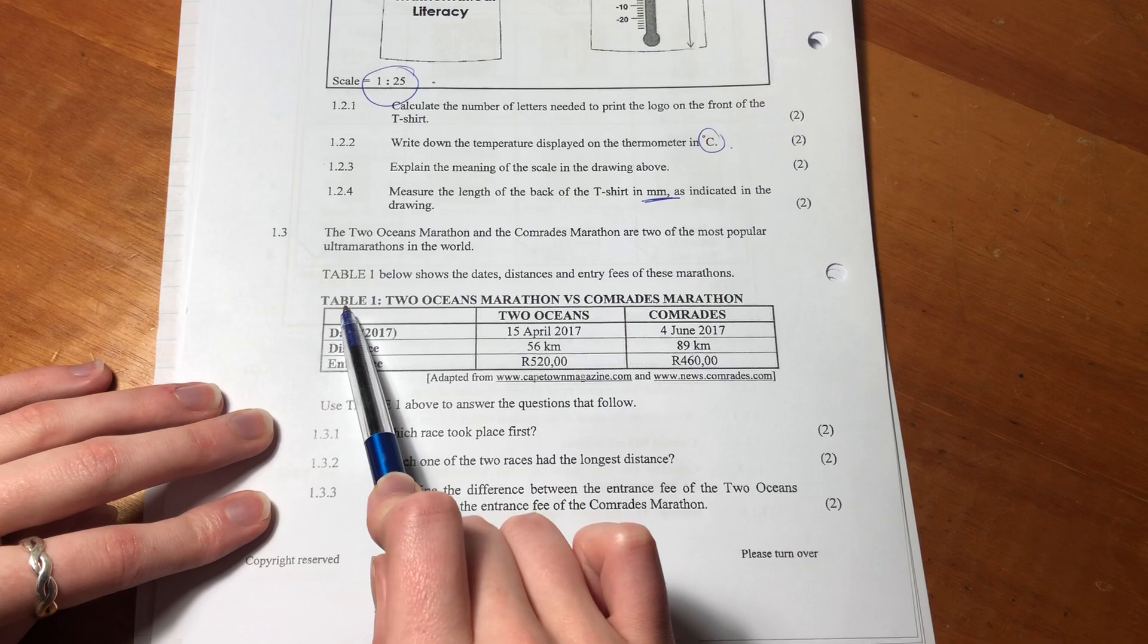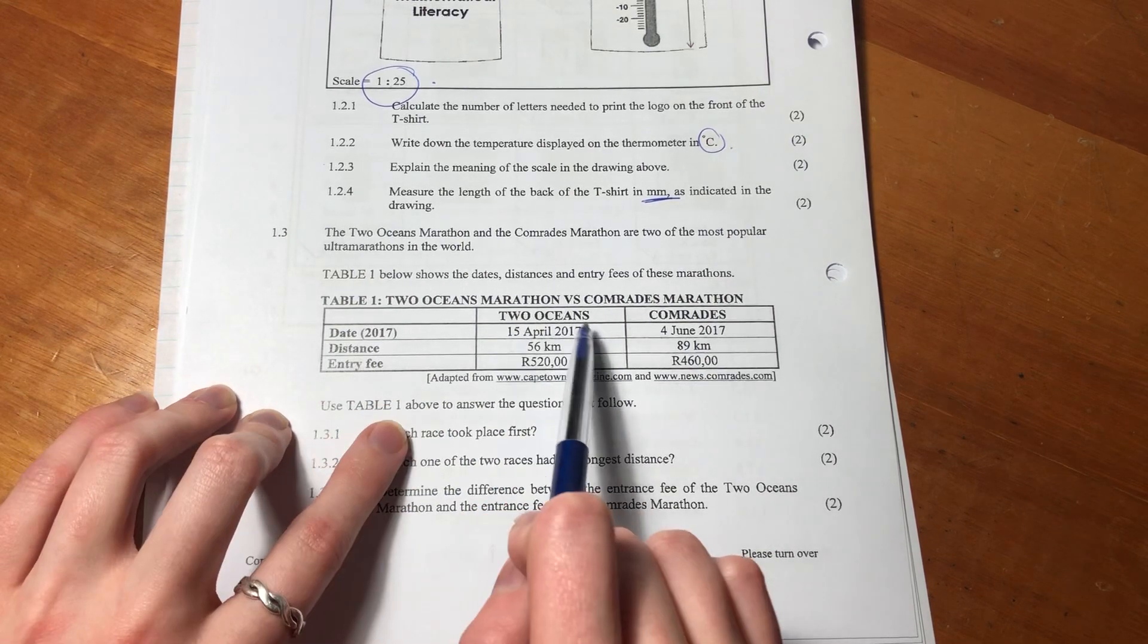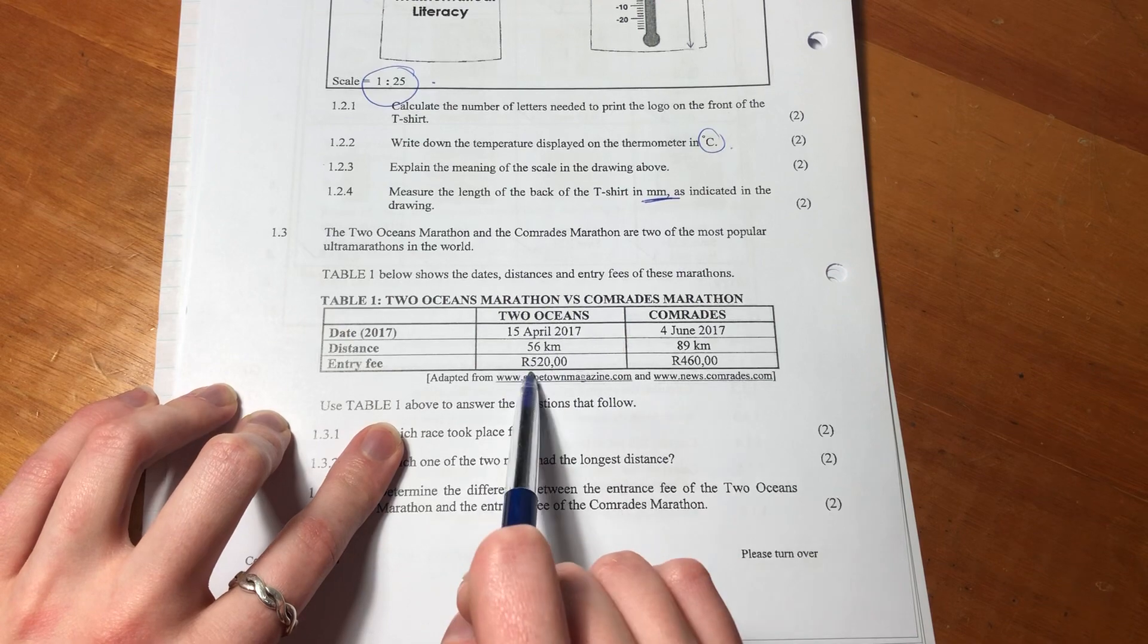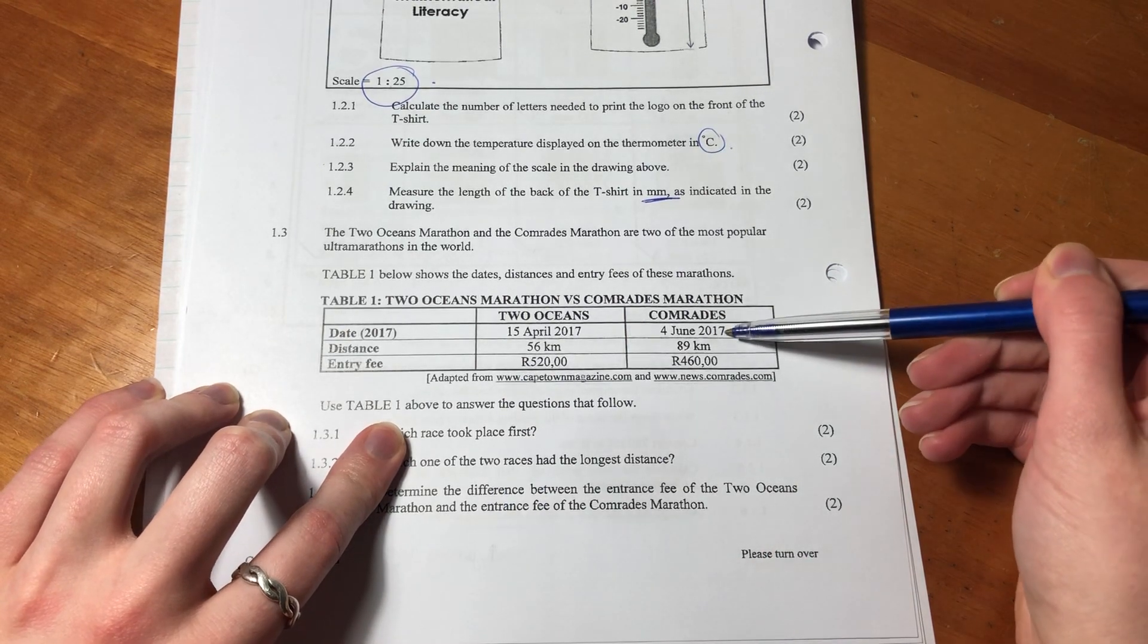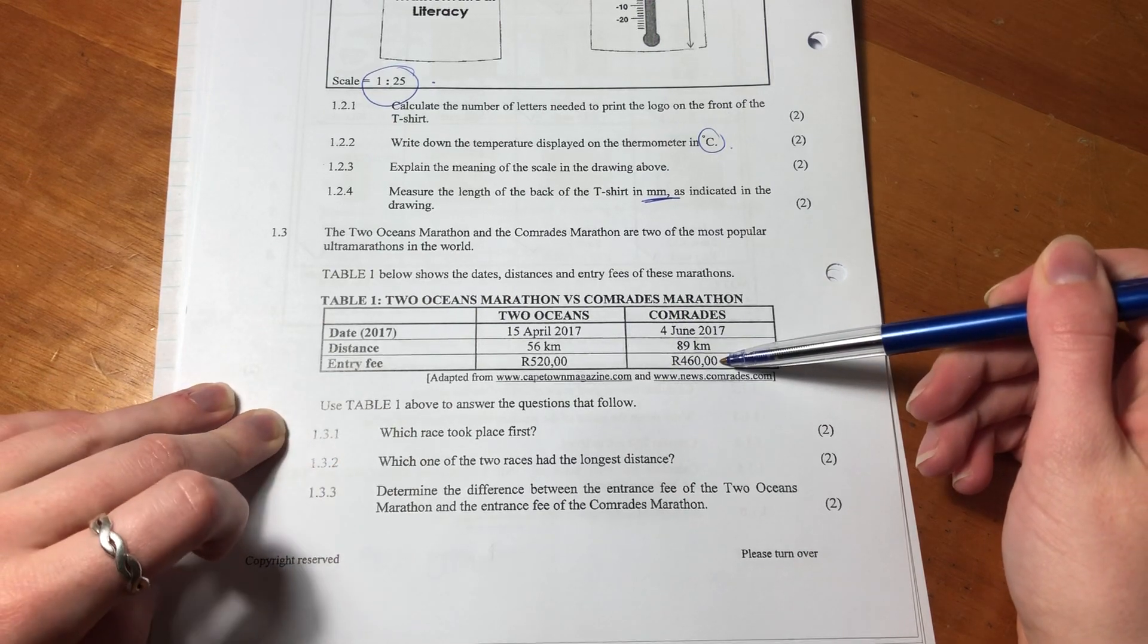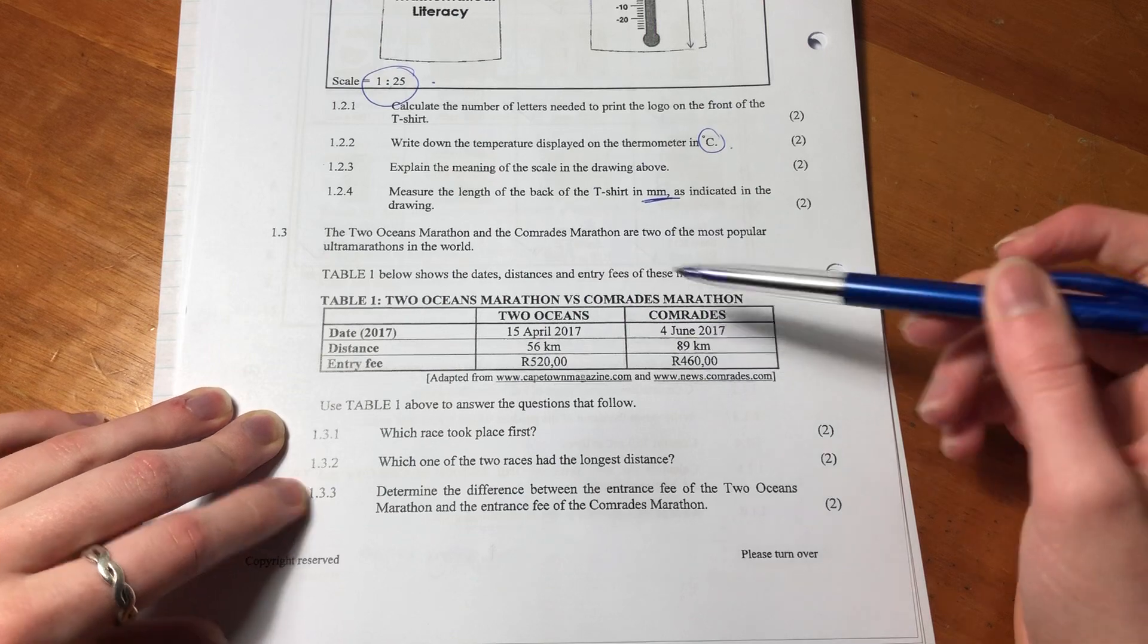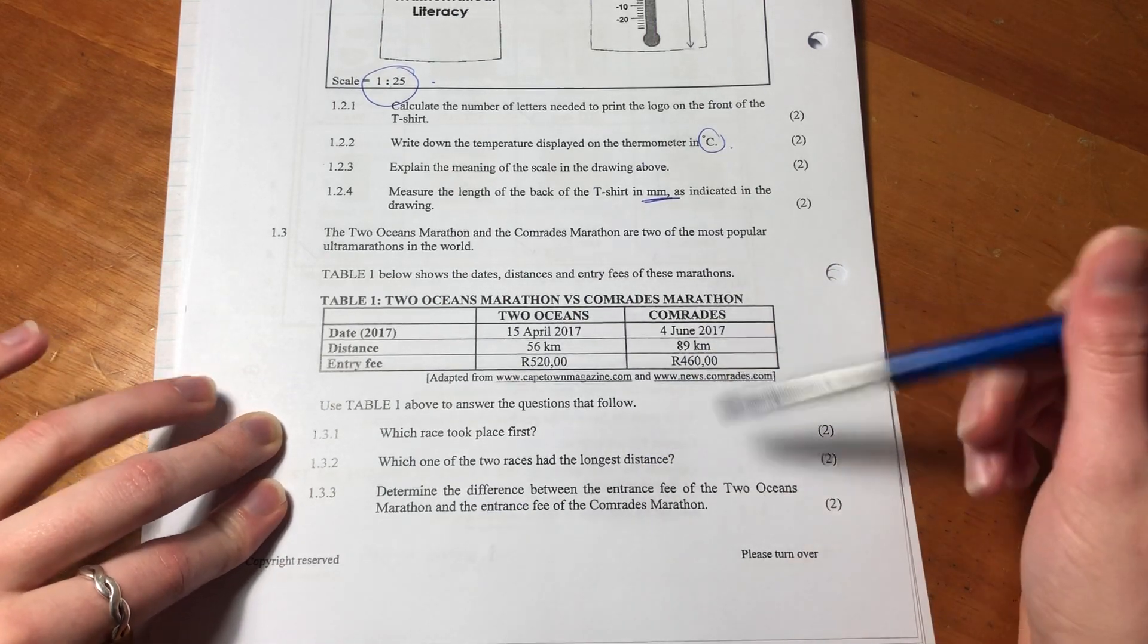Okay, so now it says, it gives us some information. So it says that the two oceans, that was the date, that's how long it is, that's how much you pay. That's the comrades, that's when it is, that's how long it is, and that is how much you pay. So we see that the comrades is a bit cheaper and a bit longer, but let's just jump into the questions.